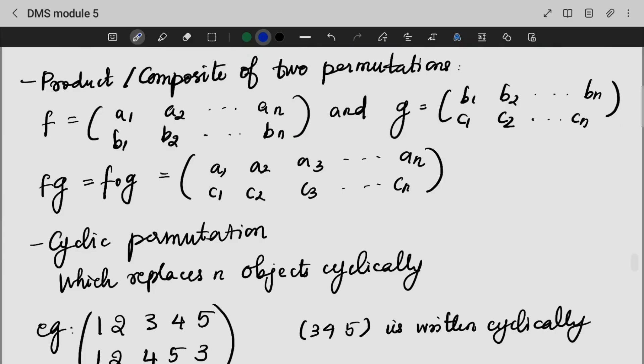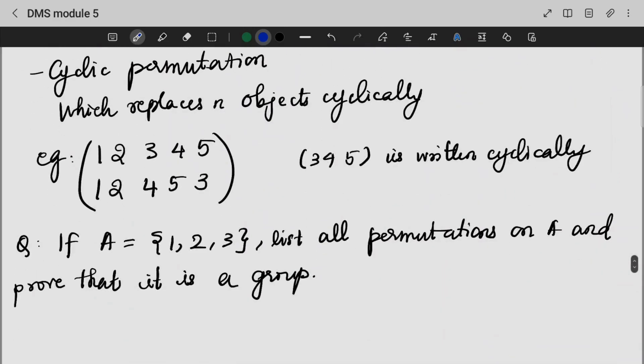Next is product or composite of two permutations. We replace elements according to the permutation. 3, 2, 1 is also a cyclic permutation. So that's all about permutation and its type. Let's do a question and check.